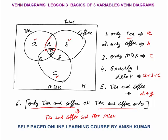This red part represents only tea and coffee. G represents people who also consume milk apart from tea and coffee, so we won't include G. The answer would be only D. Tea and coffee means D plus G — there is no restriction on people who also consume milk. But when I say only tea and coffee, G will be excluded because those people also drink milk.